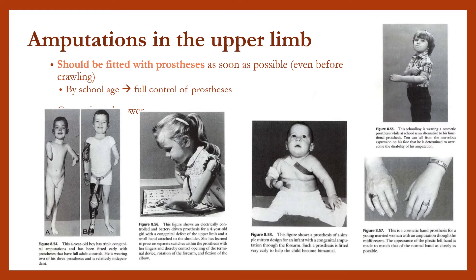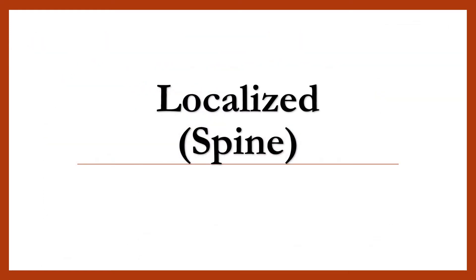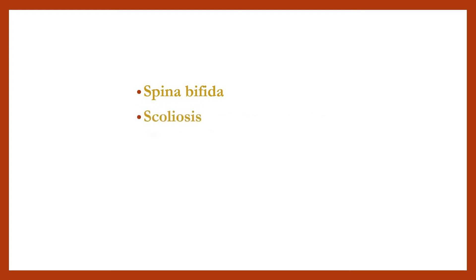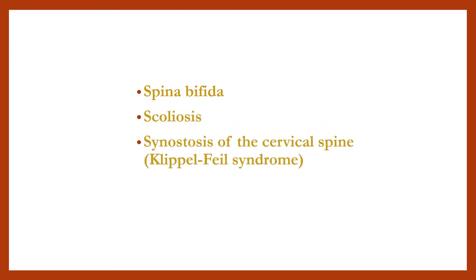Localized abnormalities of the spine include: spina bifida, scoliosis, synostosis of the cervical spine or Klippel-Feil syndrome, and muscular torticollis.